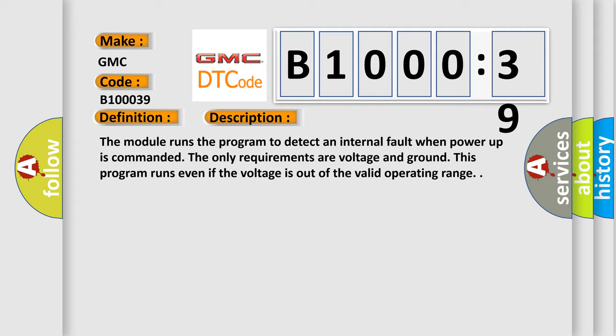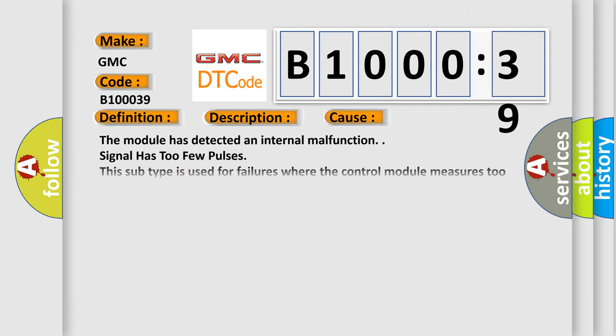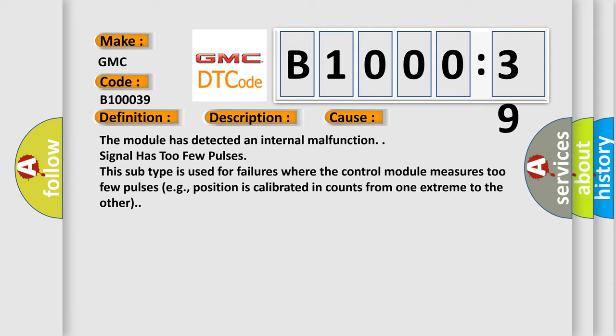This diagnostic error occurs most often in these cases. The module has detected an internal malfunction. Signal has too few pulses. This subtype is used for failures where the control module measures too few pulses, for example, position is calibrated in counts from one extreme to the other.